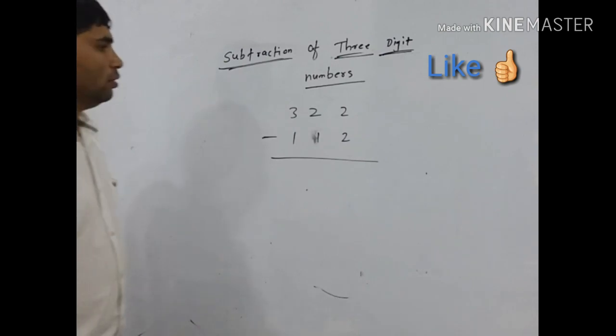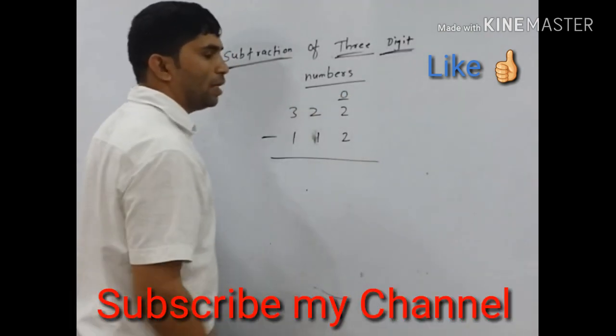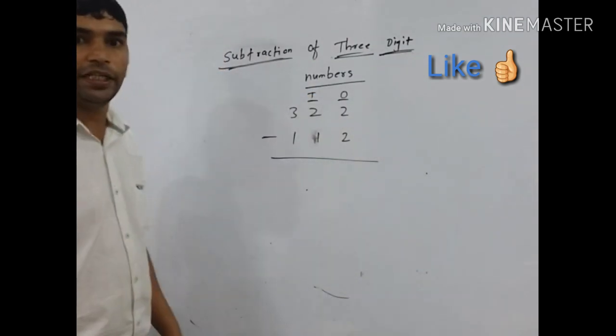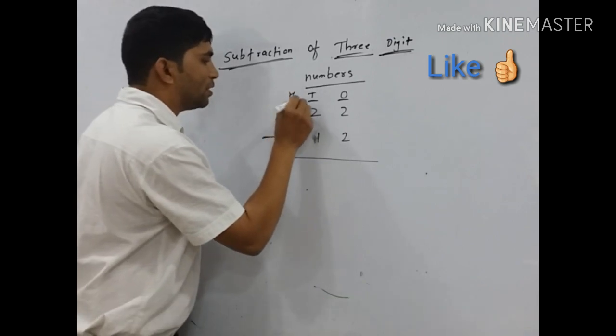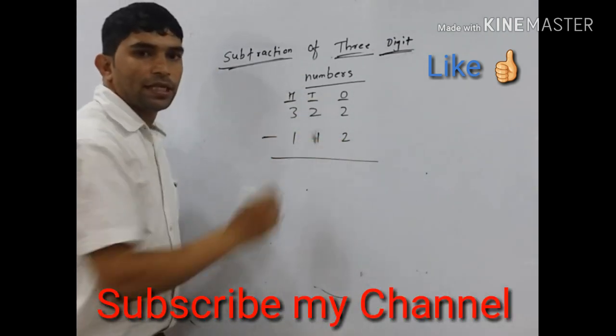In three digit numbers there are three places. First is ones place denoted by O. Second is tens place denoted by T. And next is hundreds place denoted by H. We subtract place wise.